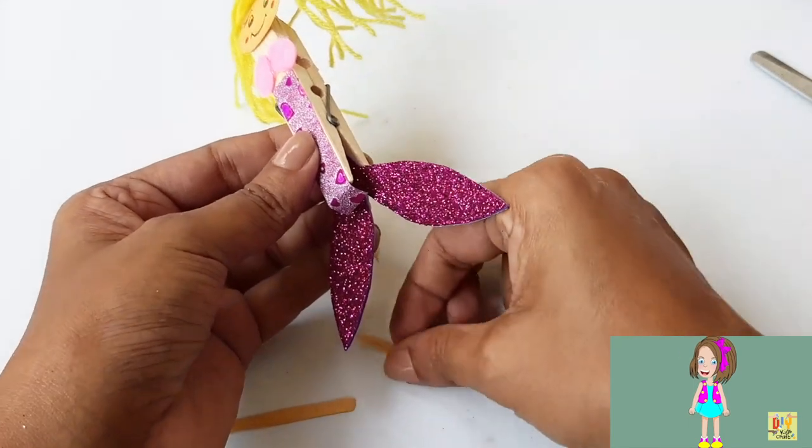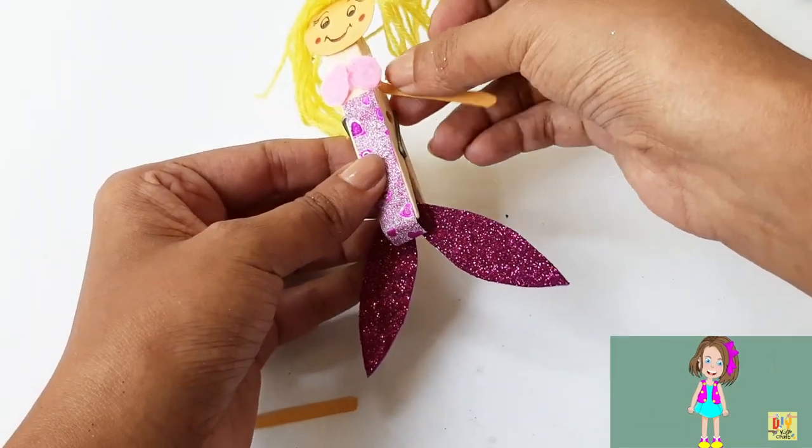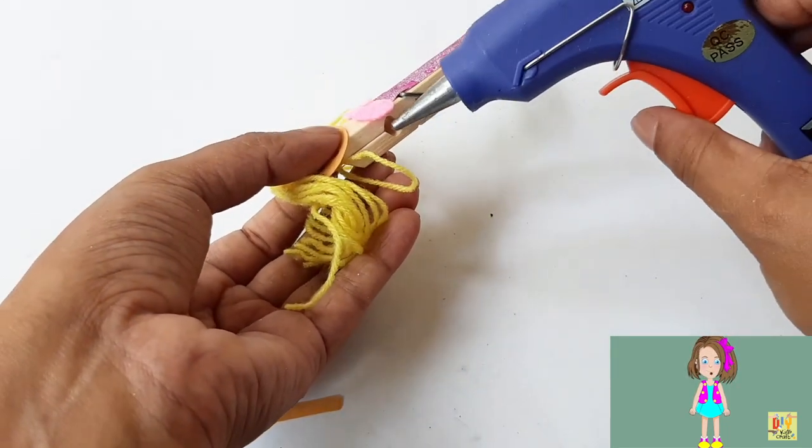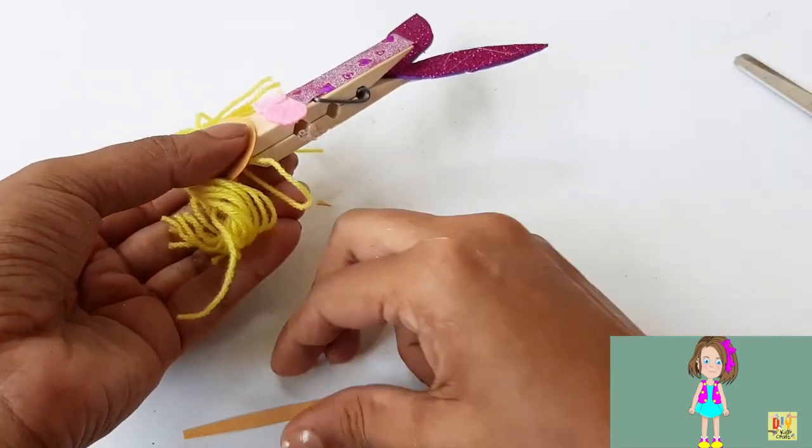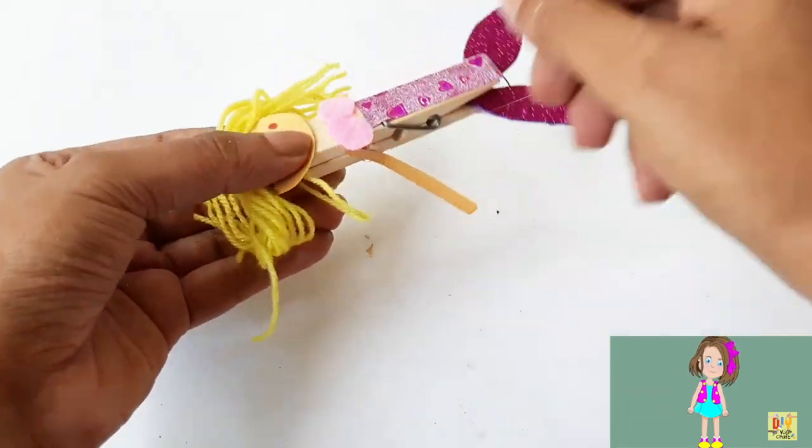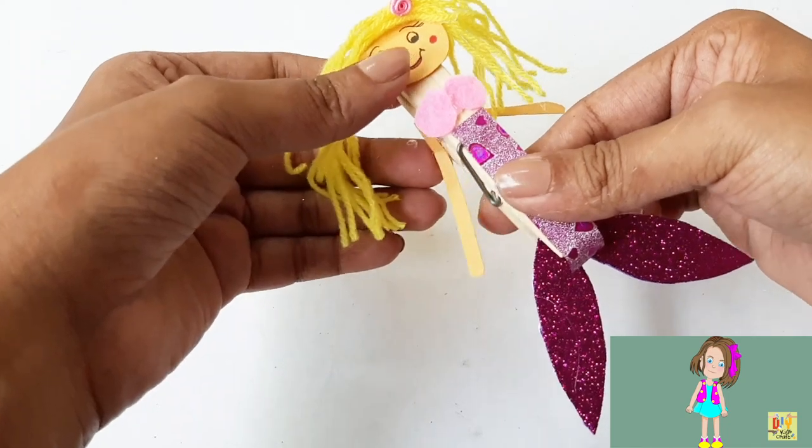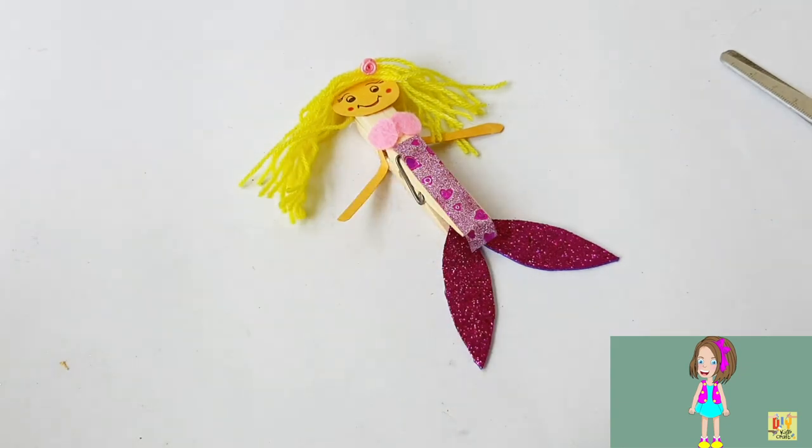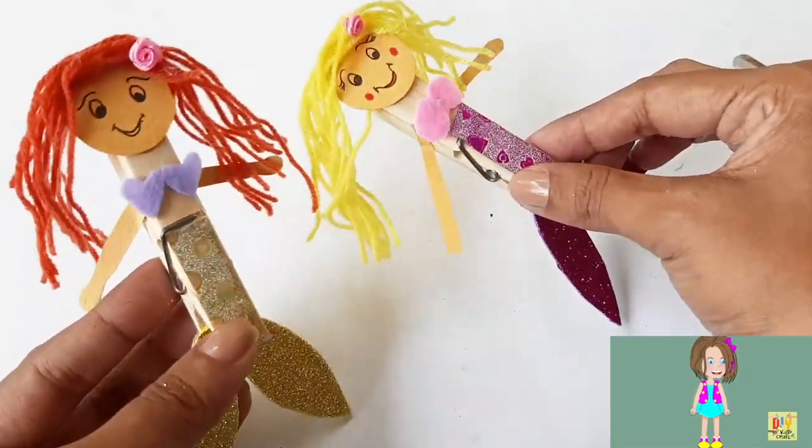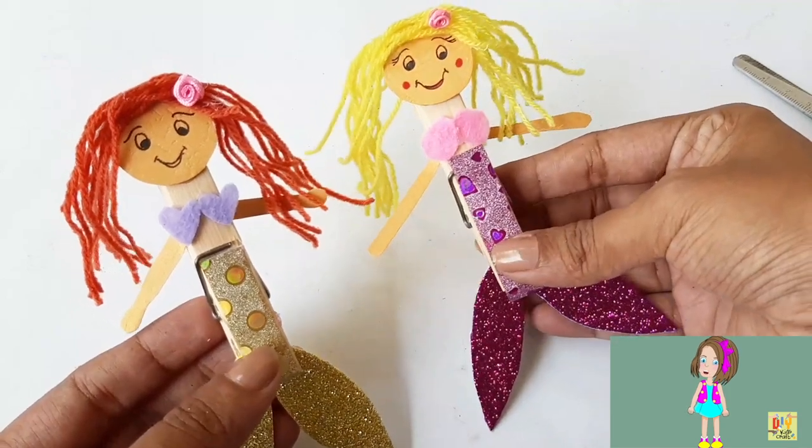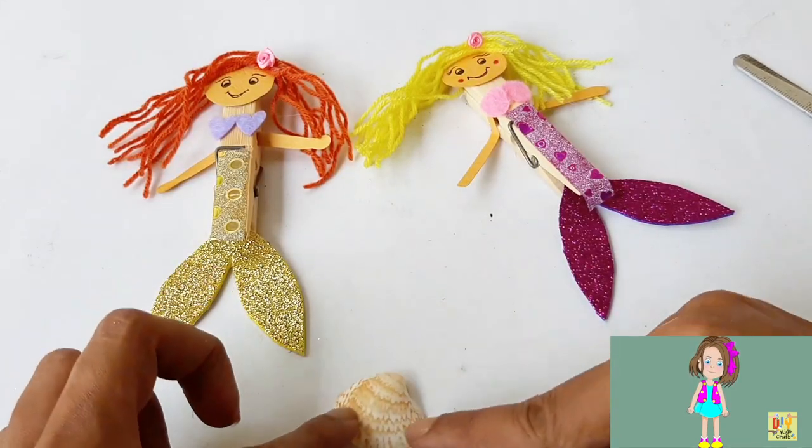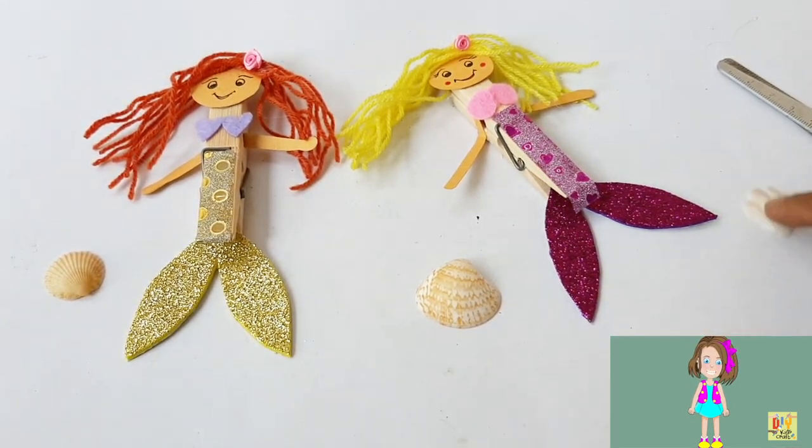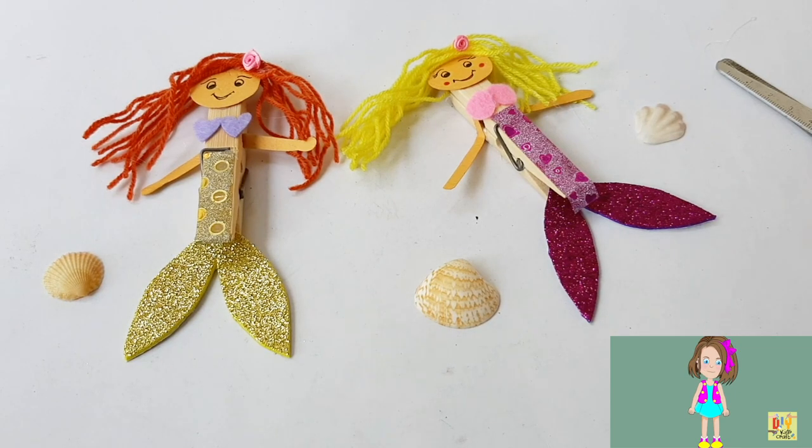Using a glue gun, let's take our mermaid's hands. Be careful because it's a little bit hot. So today we have now a mermaid using this clothespin. You can make more than one, you can make three if you want. I hope you enjoyed this craft, kids, and let's go and move to our second craft for today.